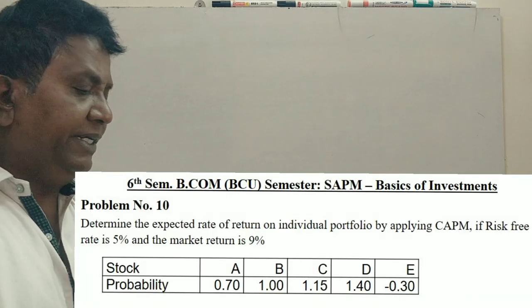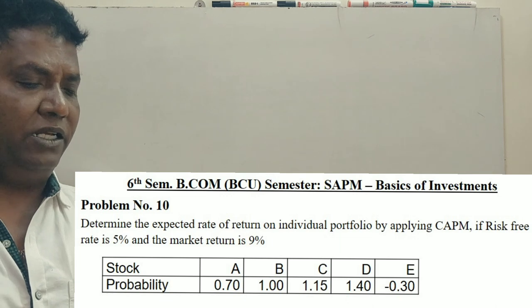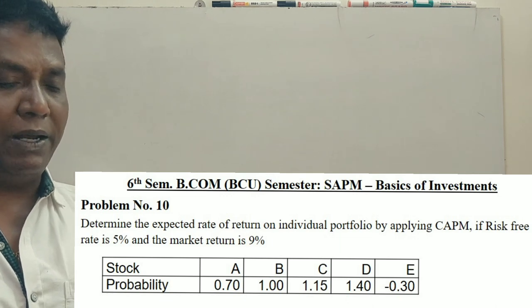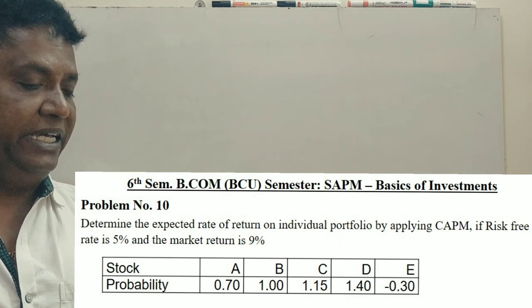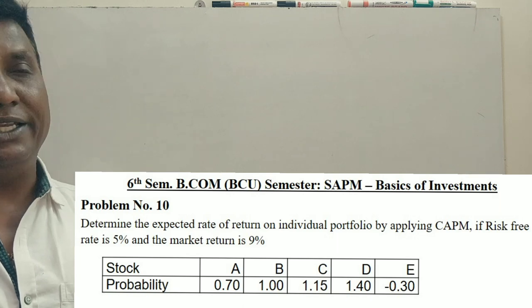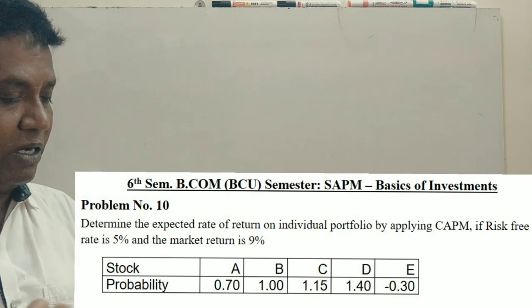Hi guys, you know one question. Determine the expected rate of return on individual portfolio applying CAPM model if risk-free rate is 5% and market return is 9%. It is a 5 marks question.